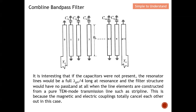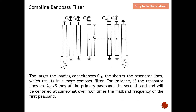If we want to implement this comb line band pass filter, we need to use microstrip line, because microstrip line is not a pure TEM mode, and therefore we will still have the band pass filter characteristics even without the capacitor. For pure TEM mode such as strip line, the magnetic and electric fields totally cancel each other, and therefore we do not have this passband characteristic.